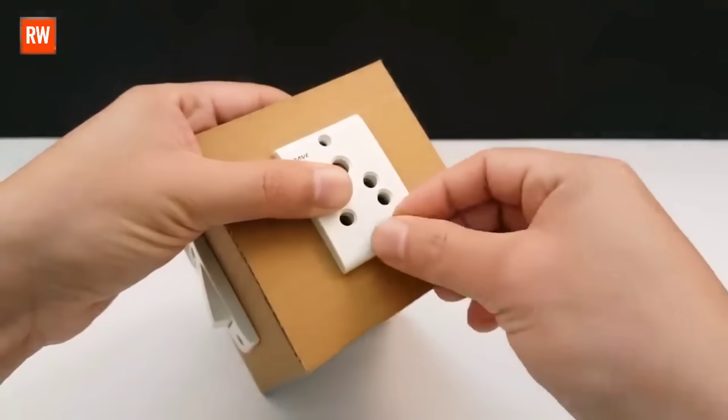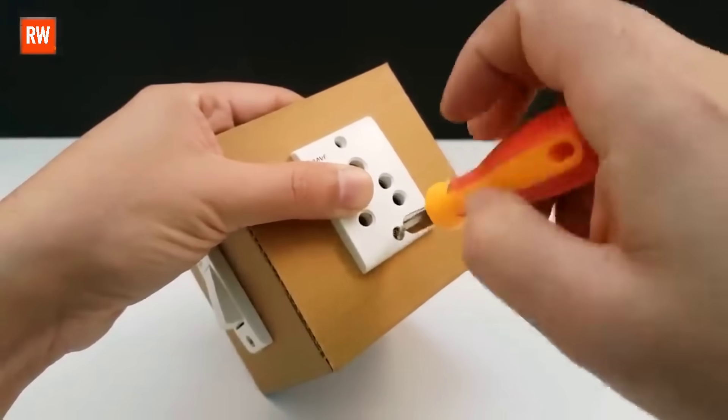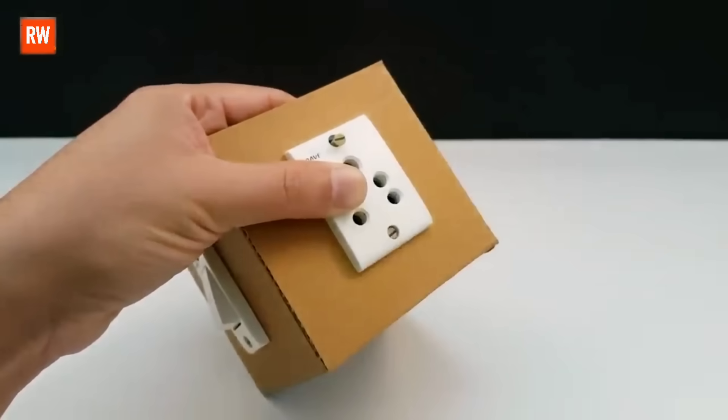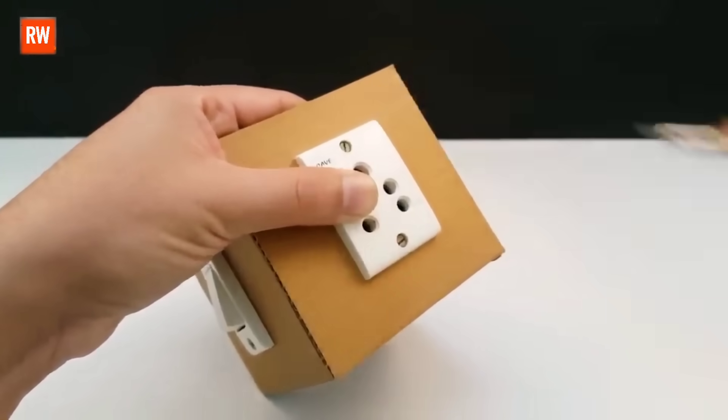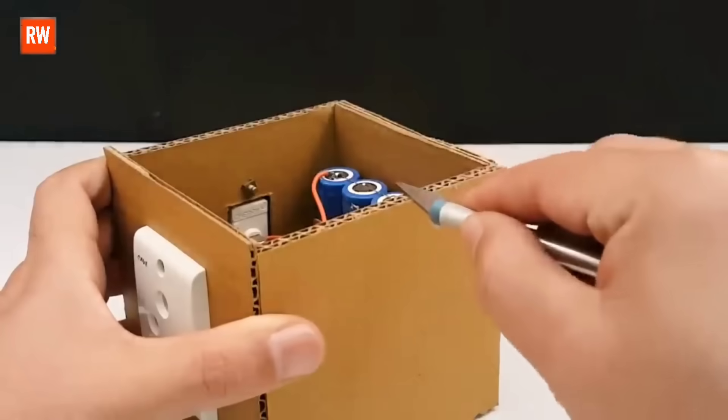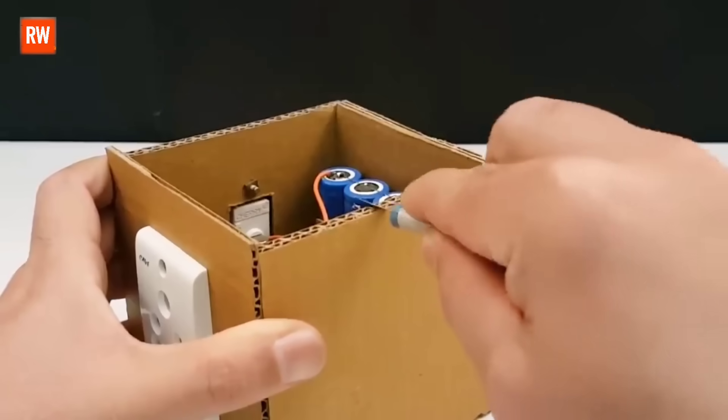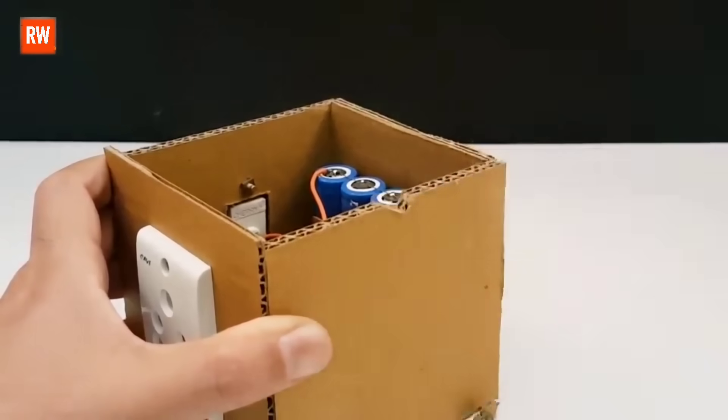After the socket is wired and secured, our physical setup is nearly complete. Now, here comes the exciting part. This DIY inverter is designed to take in a 12-volt DC input, usually from a battery source, and convert it into a 230-volt AC output.